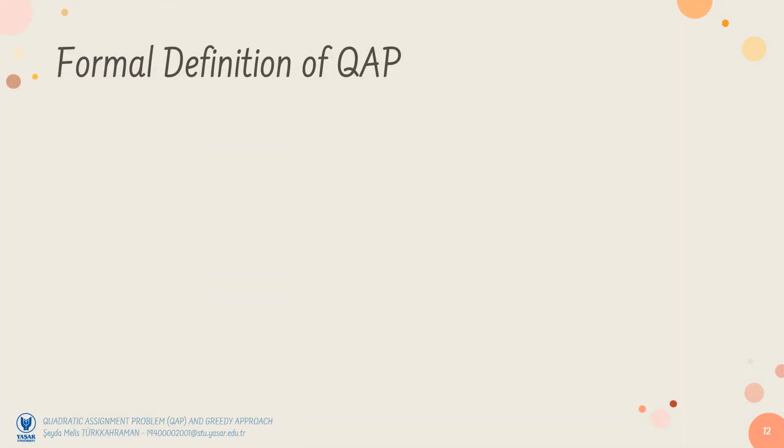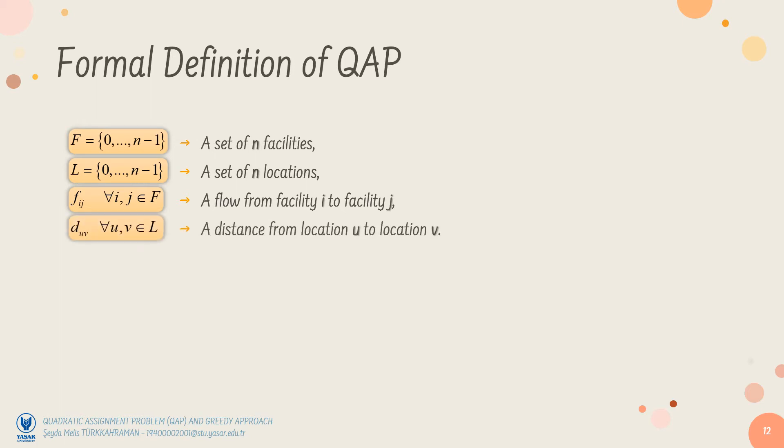In the research papers, the QAP is formulated more or less in the same way. The formulation I will explain now is from one of the chosen articles. We have two sets. Set F contains N facilities, and set L contains N locations that can host the facilities. F sub IJ represents the flow from facility I to facility J for all I and J in the set F. D sub UV represents the distance between locations U and V for all U and V in the set L.